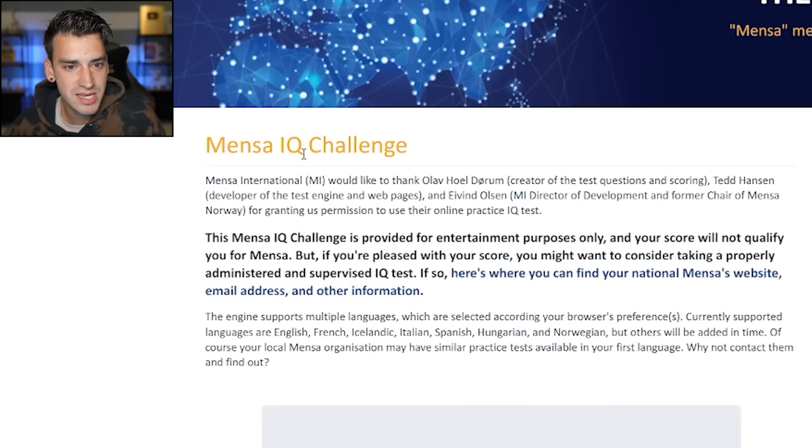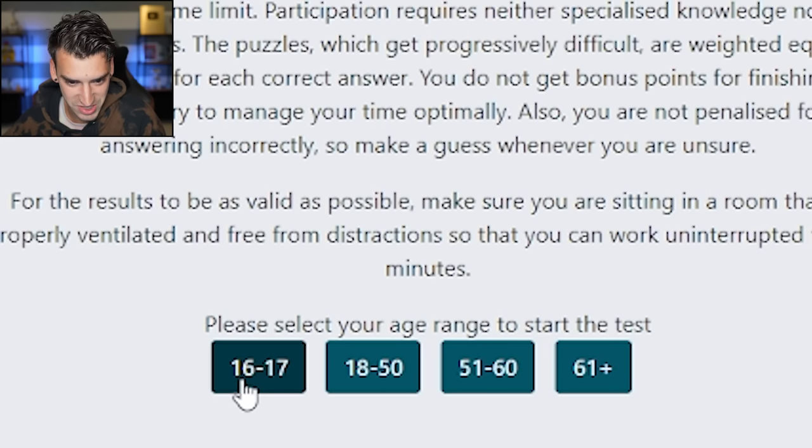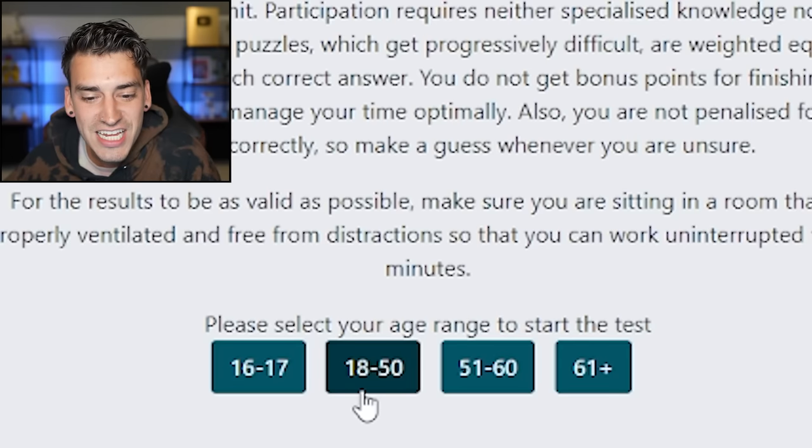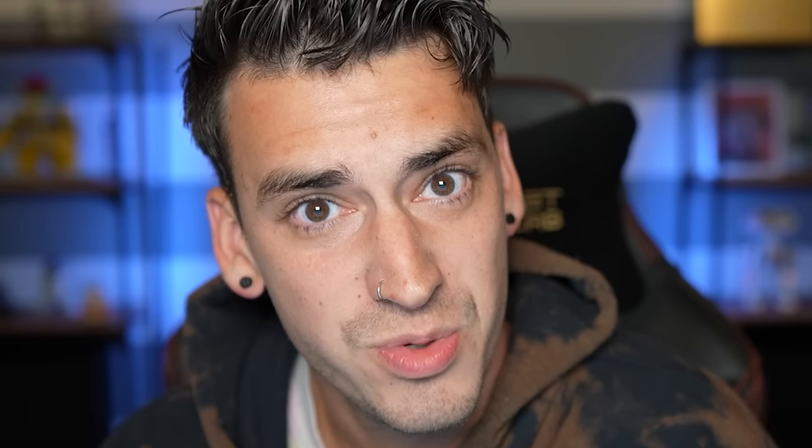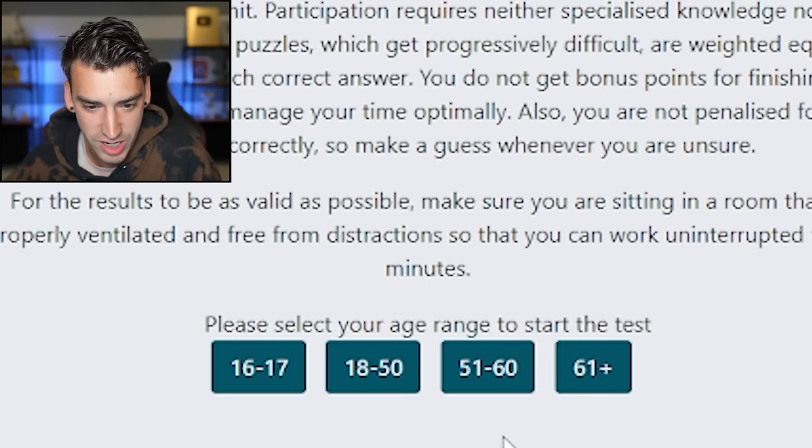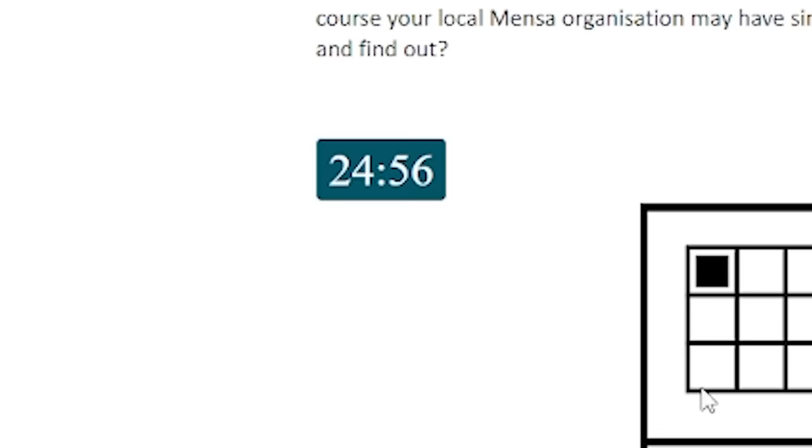All right, so this is the Mensa IQ challenge. I'm just gonna jump straight into this and see how smart I am. Look at these age ranges. 16 to 17, that's a year. 18 to 50, that's the next one. 51 to 60, then 61 up. Okay, well I am 18 to 50. Oh, I'm timed.